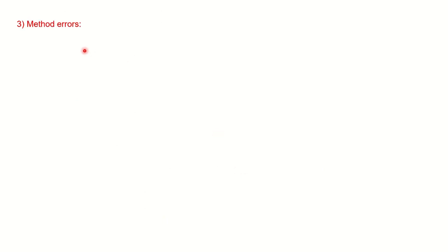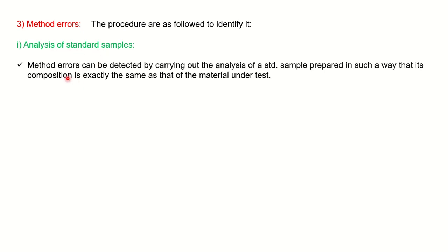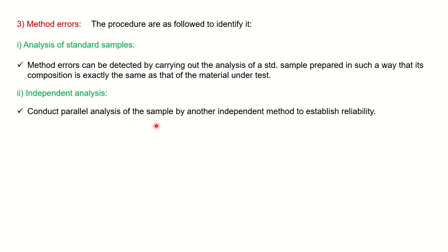The third is method error and it is difficult to find out method error. But we have certain points to find it out. One is analysis of the standard sample. Here you have to detect the standard sample which you have prepared in a way that its composition should be exactly the same as the material which you are taking for your test. The composition of the standard sample and the sample which you are analyzing should be the same. The second is independent analysis. You have to conduct the parallel analysis for the same sample to establish the reliability. You should get the reproducible result. If you are not getting that, it means certain method error is present.